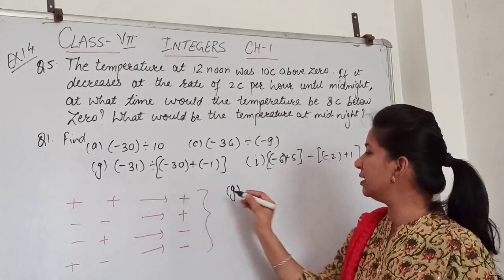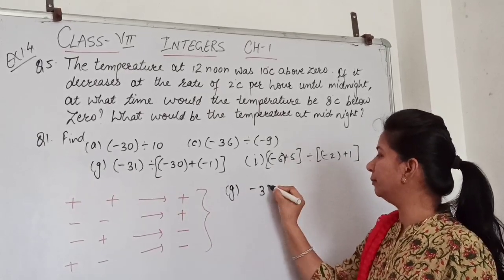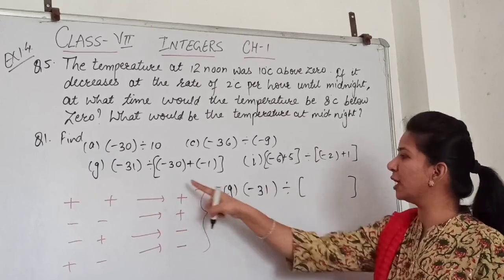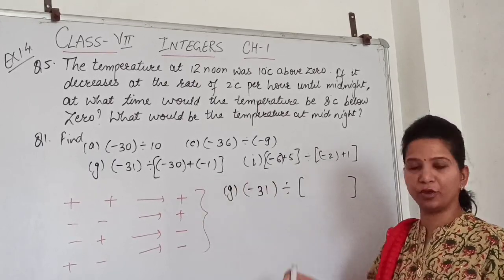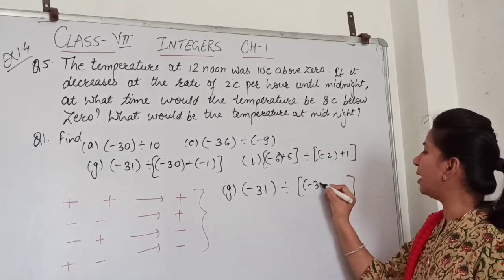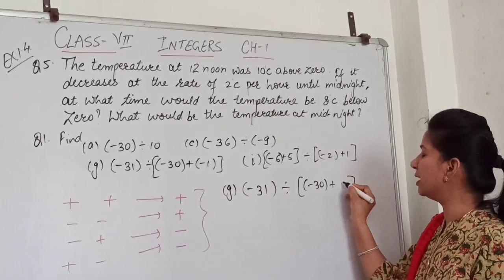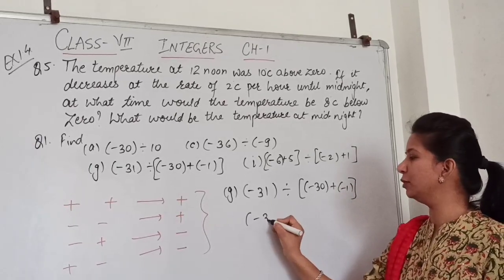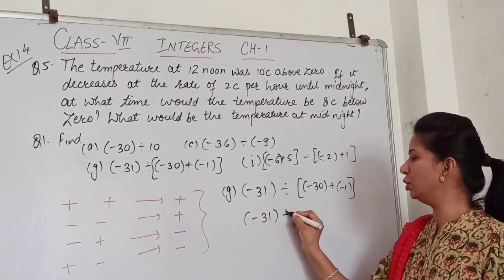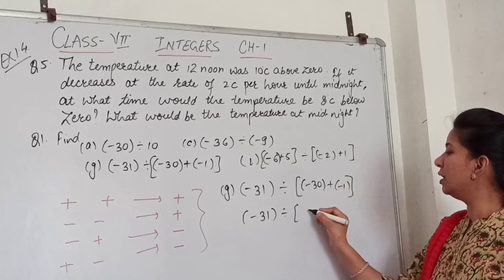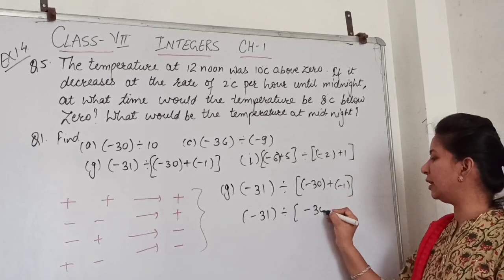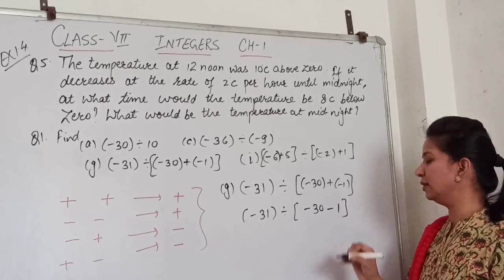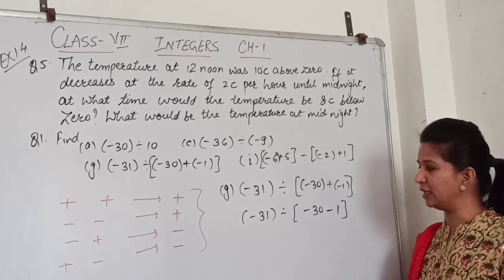We have minus 31 to divide. We solve and simplify: this is minus 30 plus minus 1. This is a bracket which we will simplify. So minus 30 and this is plus minus, which gives minus 1.